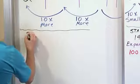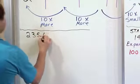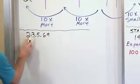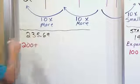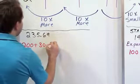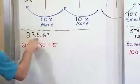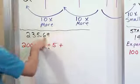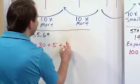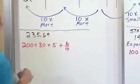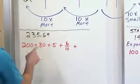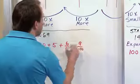What if we have 235.69 and we want to write it in expanded form? We know the first digit is in the hundreds place, so that's worth 200. The next digit is in the tens place, so it's worth 30. This digit is in the ones place, so it's worth five. That takes care of everything in front of the decimal. Then we add whatever this is worth — the six is in the tenths place, so it's six-tenths, because there are six of them and each is worth a tenth.